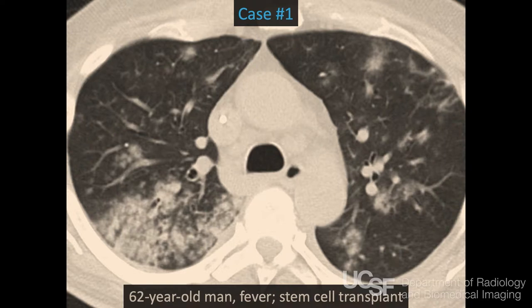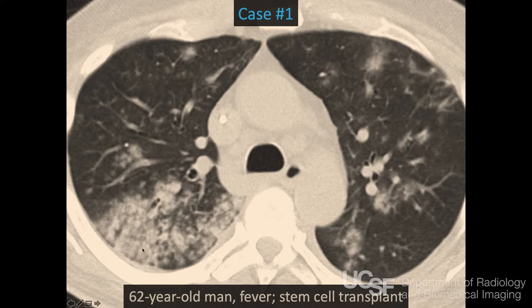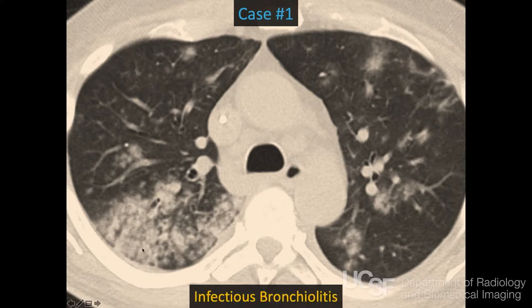We see several different findings that overlap some of the talks given this morning. We see almost more coalescent consolidation, but when you have things that are asymmetric and patchy like this, I encourage you to look in the areas that are less affected to really tease out where this process started. Over here we see a small cluster of nodules, a little bit of sparing of the pleural surface. These look like small nodules that have coalesced into larger areas of ground glass and consolidation elsewhere. This is a very good look for an infectious bronchiolitis — it's asymmetric, with nodules coalescing into larger areas of consolidation.